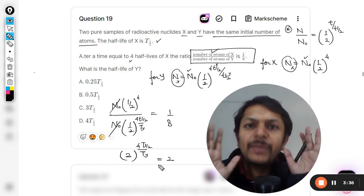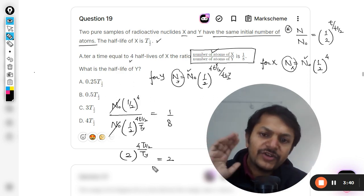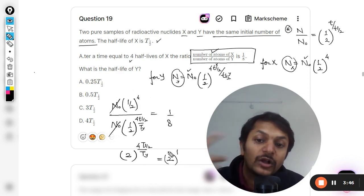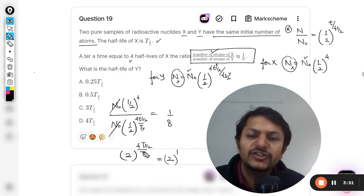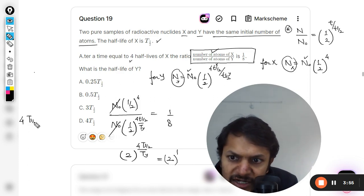This is equal to, this 16 is going to the other side. Please try to do this algebra by yourself. I know that I'm doing it in a faster manner. Try to do it by yourself. This is coming out to be equal to 2. So this is 2 raised to power 1. How to solve this now? So I say that 2 raised to power this is equal to 2 raised to power 1. It means that the exponent is equal to 1.